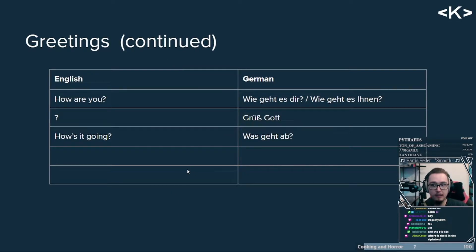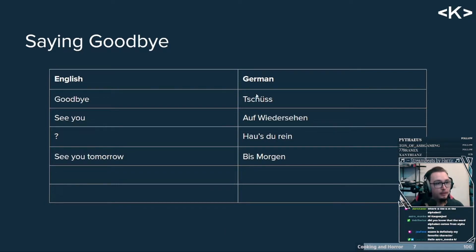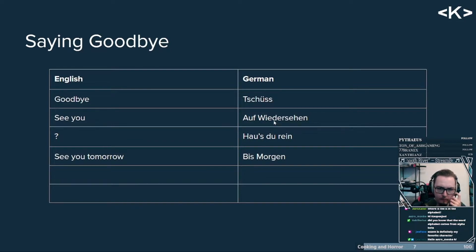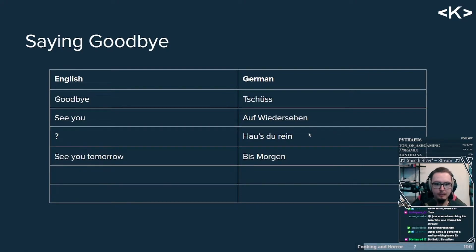Now for saying goodbye. You can say 'tschüss' — that's something to say. You can say 'auf Wiedersehen,' which is more formal. You can also say 'hau's drein.' 'Bis bald' also works, 'bis später,' 'bis morgen' — these are like 'until some time' or 'see you tomorrow.'